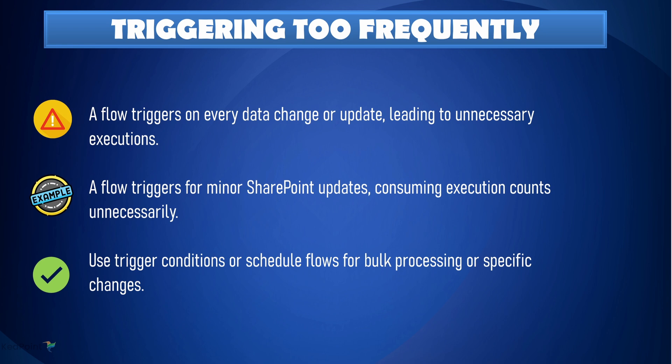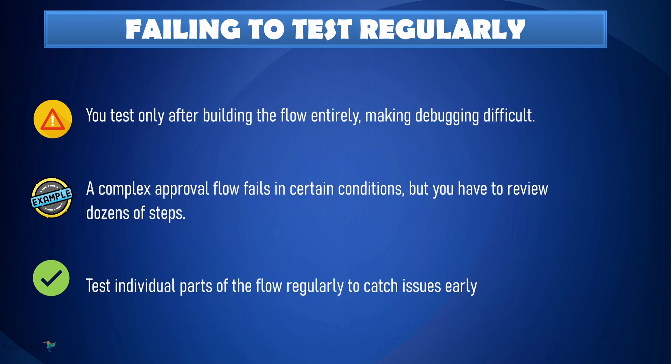Eighth: avoid triggering your flows too often. Triggering a flow too frequently can result in unnecessary resource consumption and even hitting Power Automate limits. Let's say your flow triggers every time someone updates a SharePoint list — instead of triggering for every small change, set up trigger conditions. For example, trigger the flow only when a specific field is updated like a status field, or run the flow on a schedule for bulk processing.